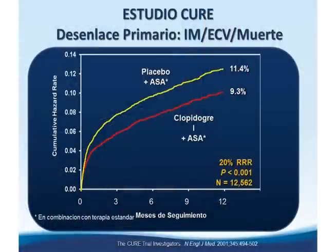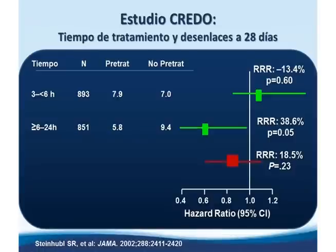El estudio CURE, publicado en 2001 en New England Journal of Medicine, evaluó pacientes con síndrome coronario agudo sin elevación del ST. La comparación de placebo más AAS versus clopidogrel más aspirina demostró una reducción del riesgo relativo del 20% en el desenlace compuesto de infarto de miocardio, ACV y muerte, tanto a 30 días como a 12 meses, estableciendo la terapia dual en estos pacientes.